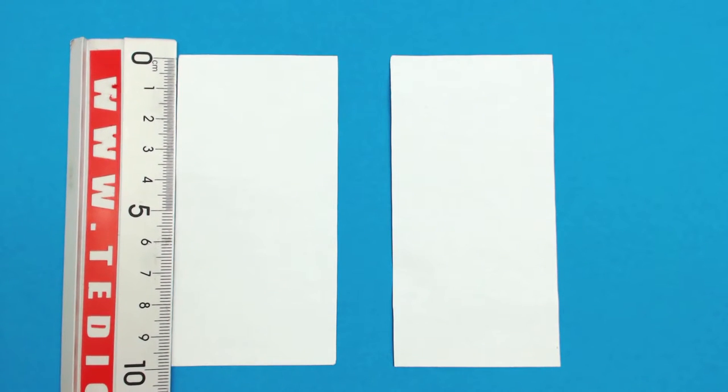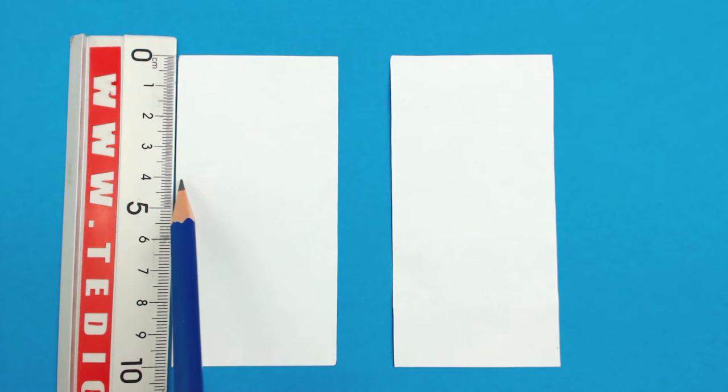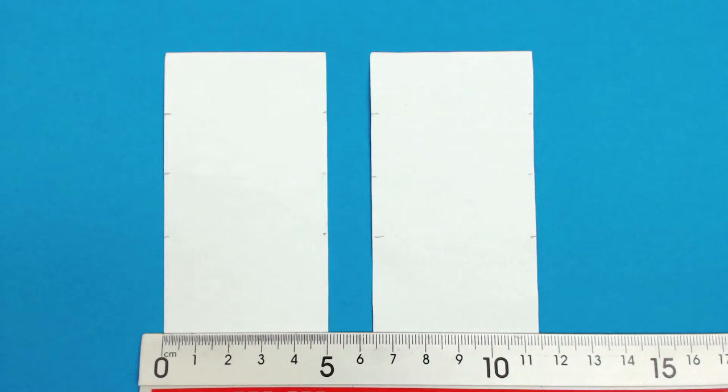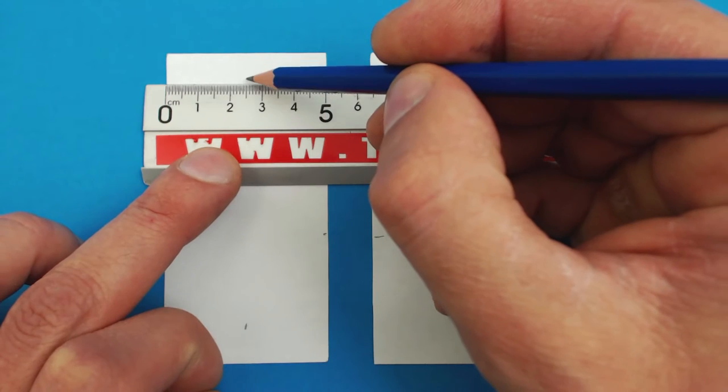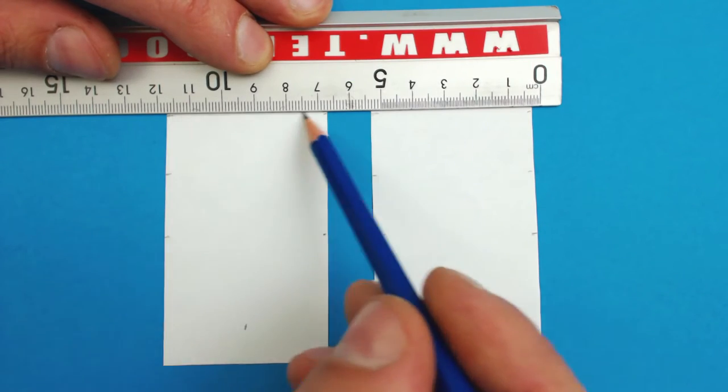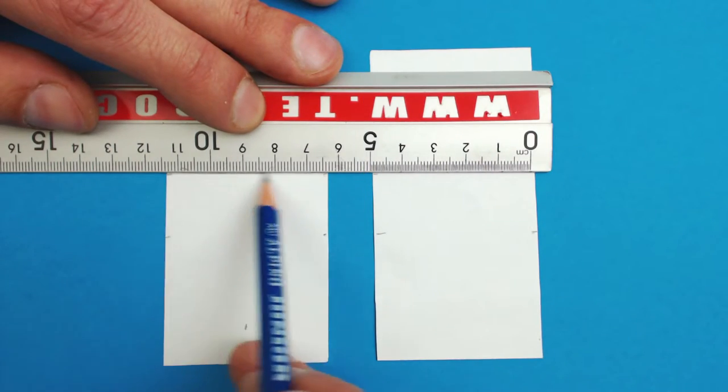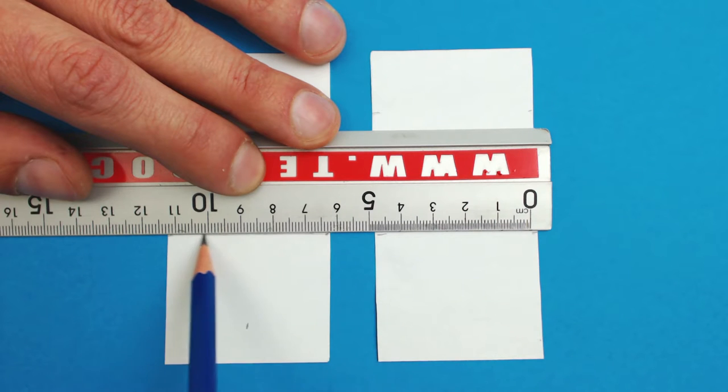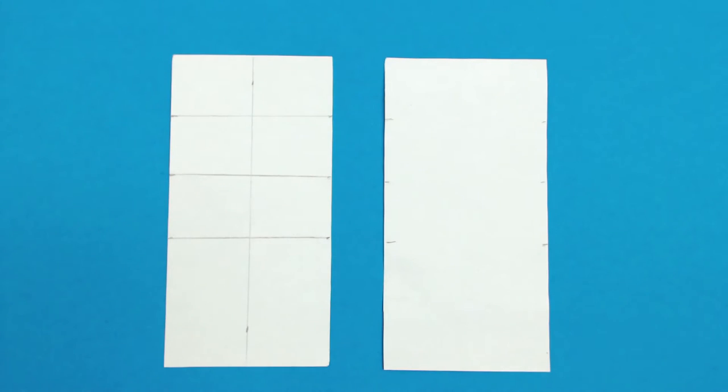After mark 2, 4 and 6cm from the top on both pieces of paper. Then mark 2.5cm from the width on one of the pieces. Now join the dots as shown here. One of the pieces only requires the horizontal lines.